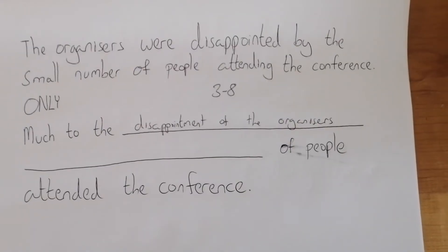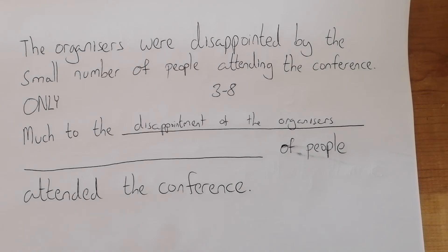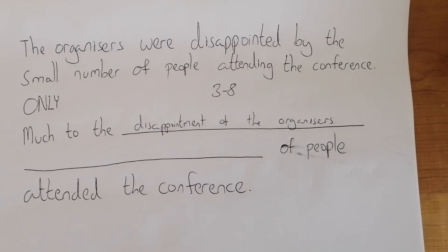This structure that we're focused on here is 'much to something,' and then you've got to use a noun. For example, 'much to my amazement' — para mi asombro — or 'much to my surprise' — para mi sorpresa.